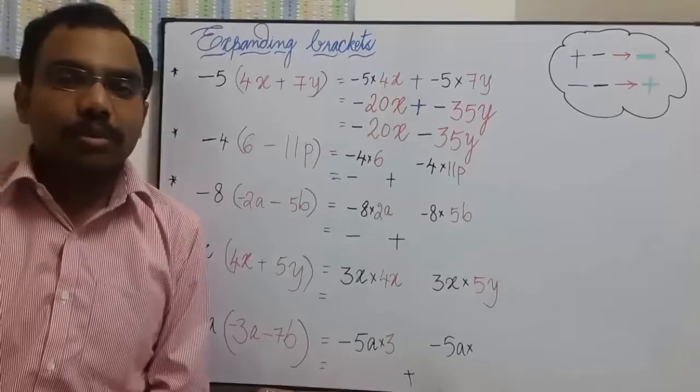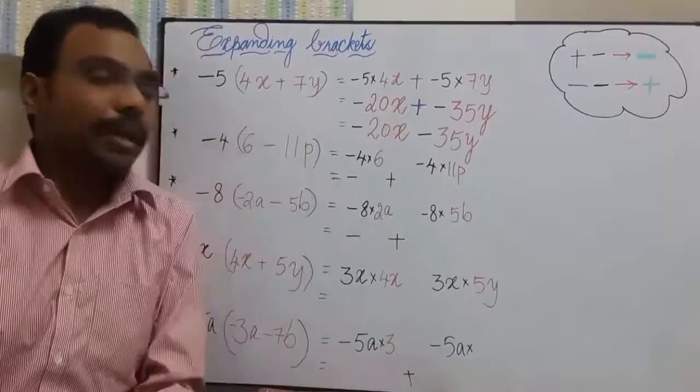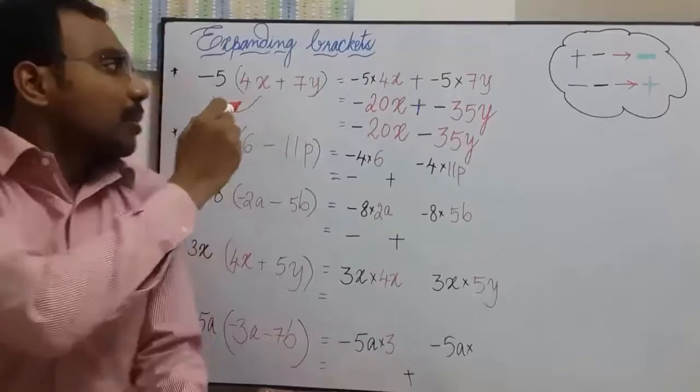Now we shall see some more examples. Minus 5 times 4x plus 7y. If you observe here, minus 5 has been distributed to 4x and it has been distributed to 7y.